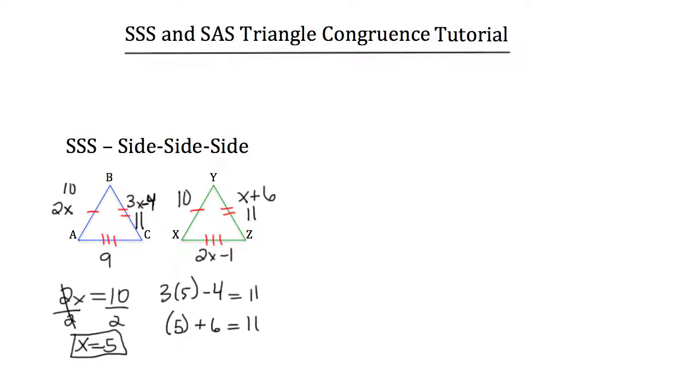On the bottom of the triangles, we know that AC is 9 because they've told us that. XZ, we could plug in that 5. 2 times 5 minus 1 is also 9. So that tells us that these two triangles are congruent, and we use the side-side-side postulate to prove that.